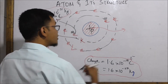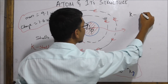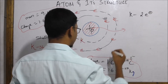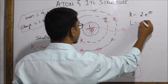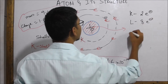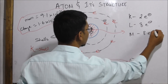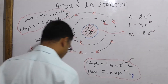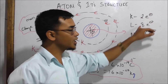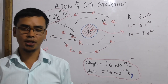The first shell is the K-shell. The K-shell holds electrons, the L-shell holds electrons, and the M-shell holds electrons. The last shell holds the remaining electrons.